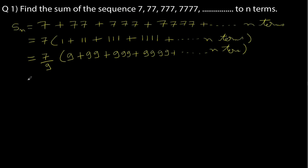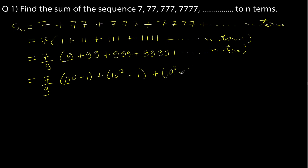You will see why I did that. The trick is: 9 is 10 minus 1. What is 99? It is 100 minus 1, or 10 squared minus 1. What I'm trying to do is bring each term into the form of a geometric progression. So 999 would be 1000 minus 1, that is 10 to the power 3 minus 1, and the next term would be 10 to the power 4 minus 1, and so on up to n terms.